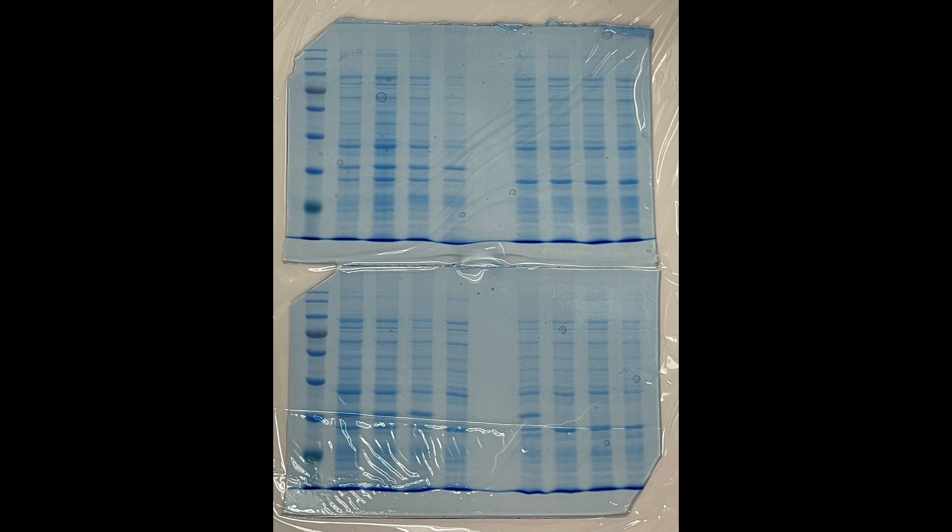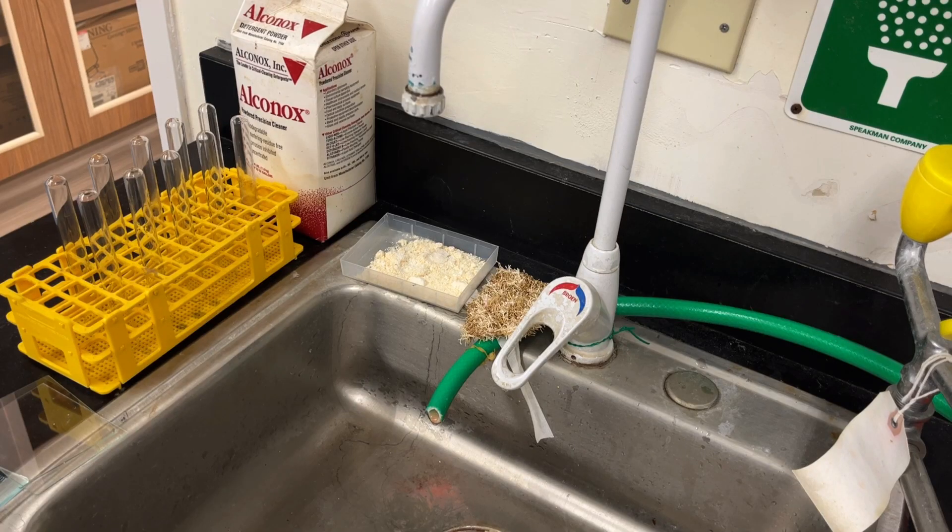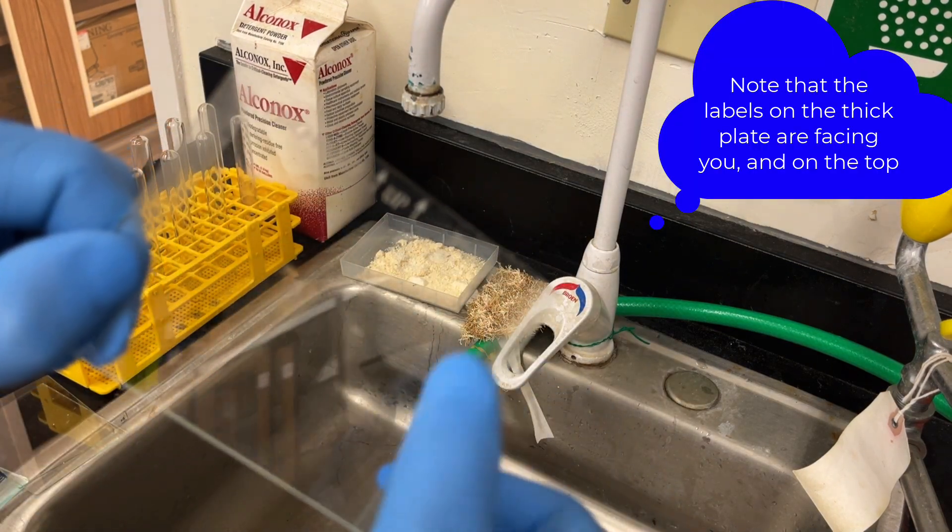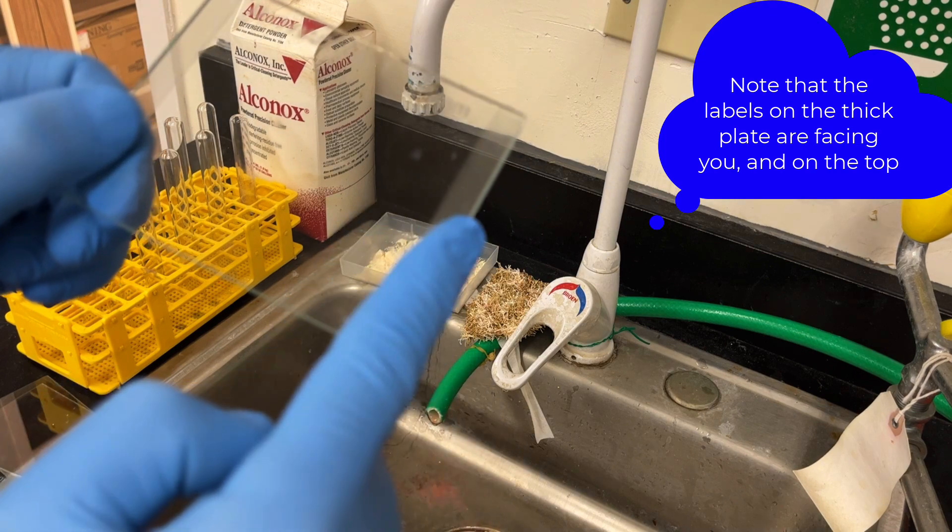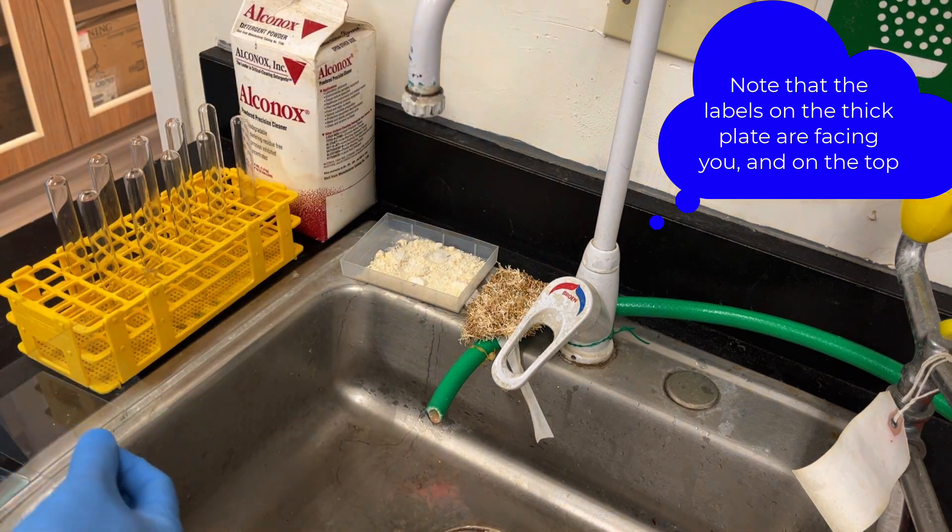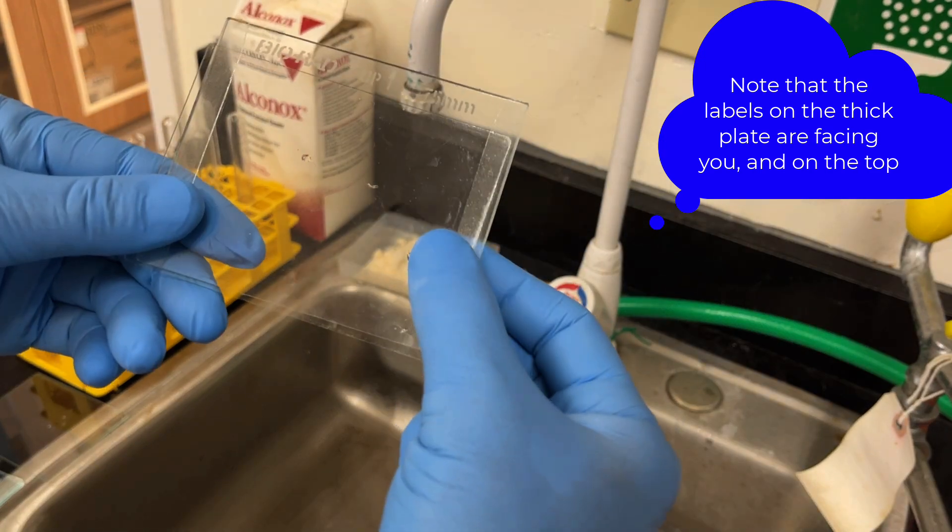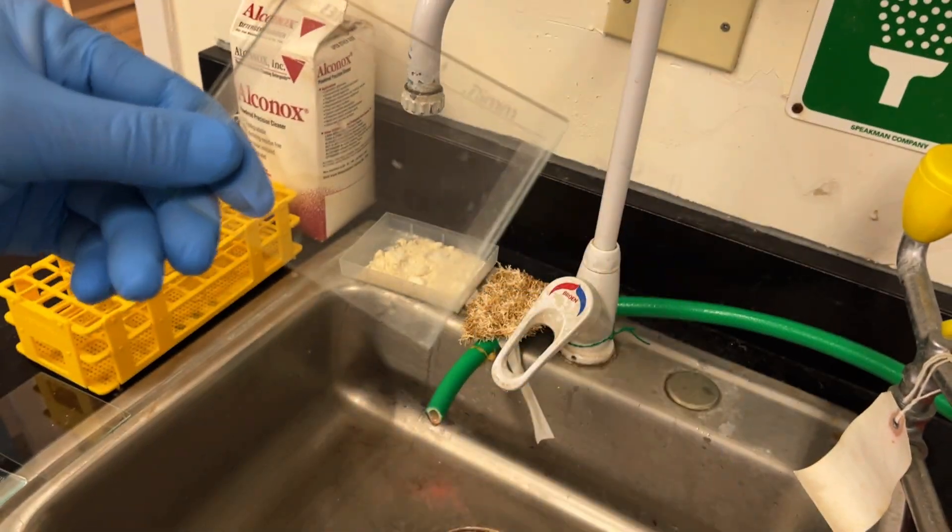An important difference between agarose gels and SDS-PAGE gels is that we pour an SDS-PAGE gel in between two glass plates. So it's important that they're very clean. We've got a thick plate with these little ridges and then a shorter plate, a little bit smaller, that sits on top of that little ridge. Cleanliness is very important; any small sticky bits will cause your gels to stick.